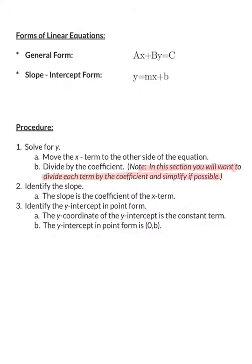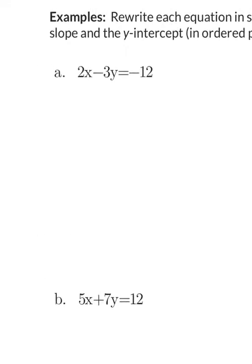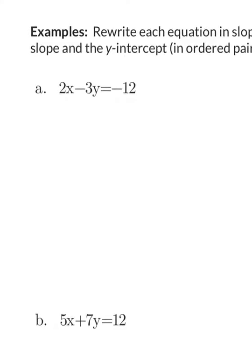Let's go ahead and now look at some examples and see what we're going to do. If we look at example a, for example a, in order to write this in slope-intercept form, we want to go ahead and solve for y. My first step to solve for y is I need to move any non-y terms to the other side of the equation, which means that I need to move my 2x.